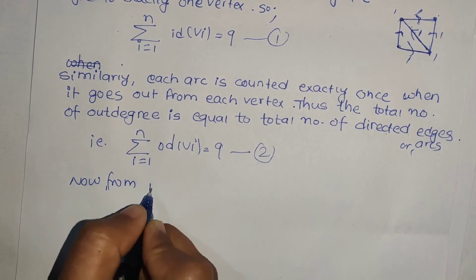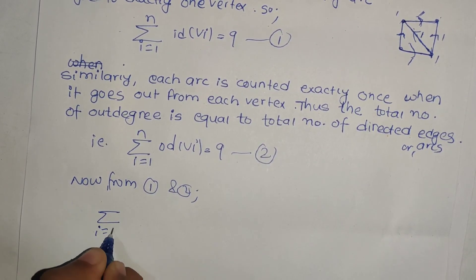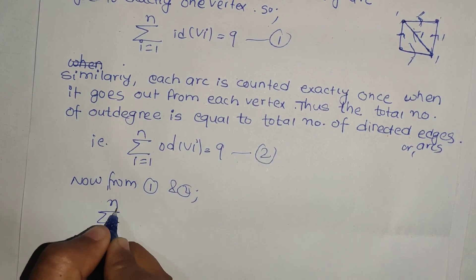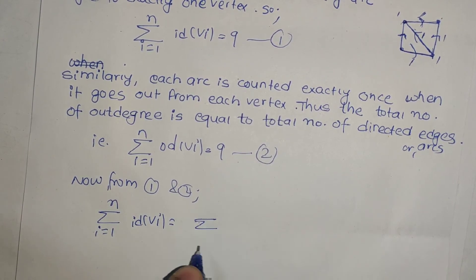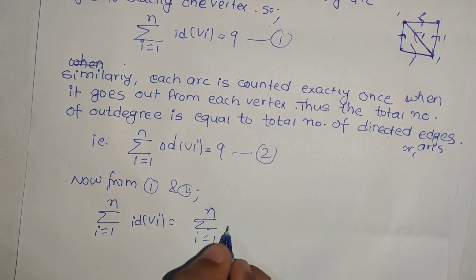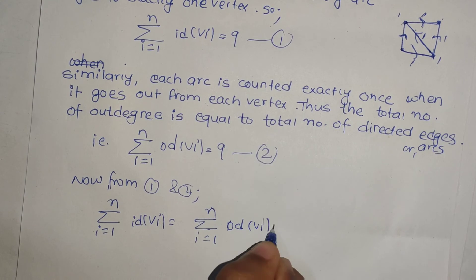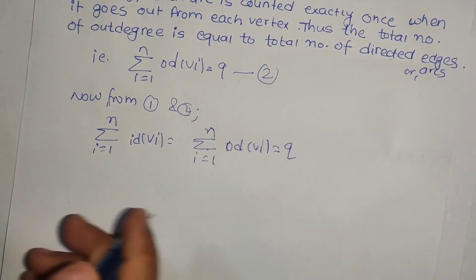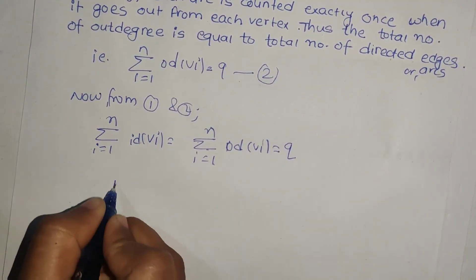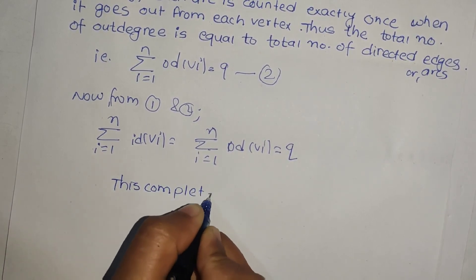Thus, the total number of out-degrees is equal to the total number of directed arcs. Now, from equations 1 and 2, the sum of in-degrees of vertices equals the sum of out-degrees, both equal to q. This completes the proof.